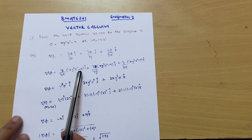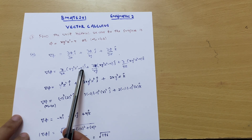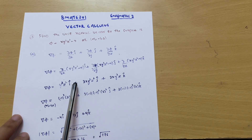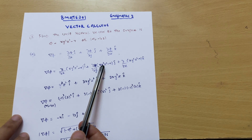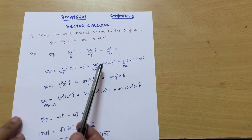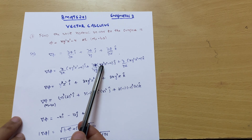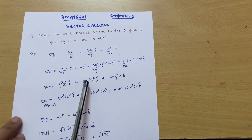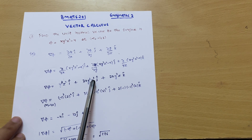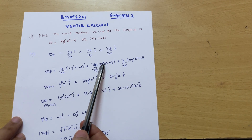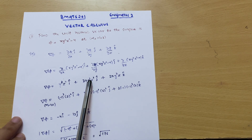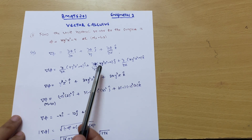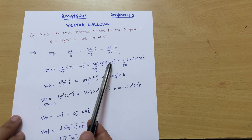For the y-component, we differentiate the y term with respect to y; x and z² remain constant. The differentiation of y³ is 3y², and the constant term gives 0. So we get 3y² for this term, giving 3y² j-cap.